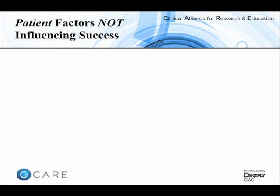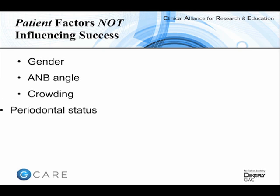Factors that don't appear to affect success include the sex of the patient, their Class 2 or Class 3 malocclusion before treatment, the amount of crowding, their periodontal status provided it is controlled, and whether they have a history of TMD.